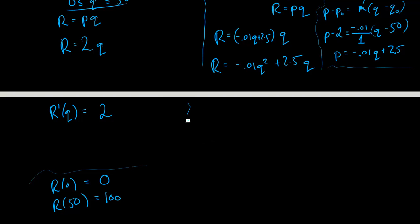So now let's come over here. R prime of Q over here would be equal to negative 0.02Q plus 2.5. And if we set this thing equal to 0 and solve it, you'll actually find that Q is equal to 125. And indeed, if you did a first derivative test here in R prime, you'd see that this thing, the 125, so if we plugged in something to the left of 125,